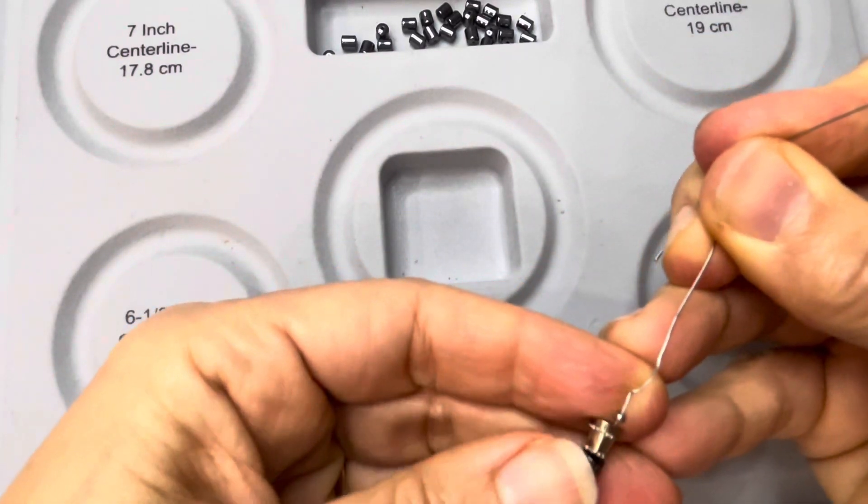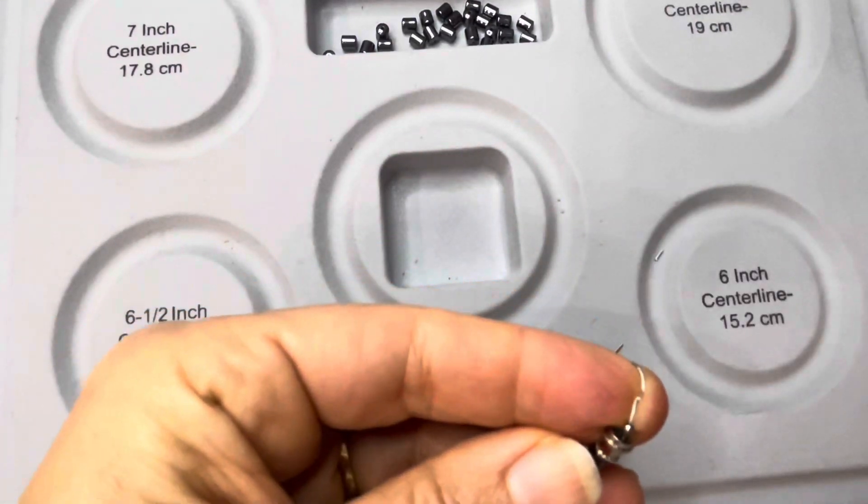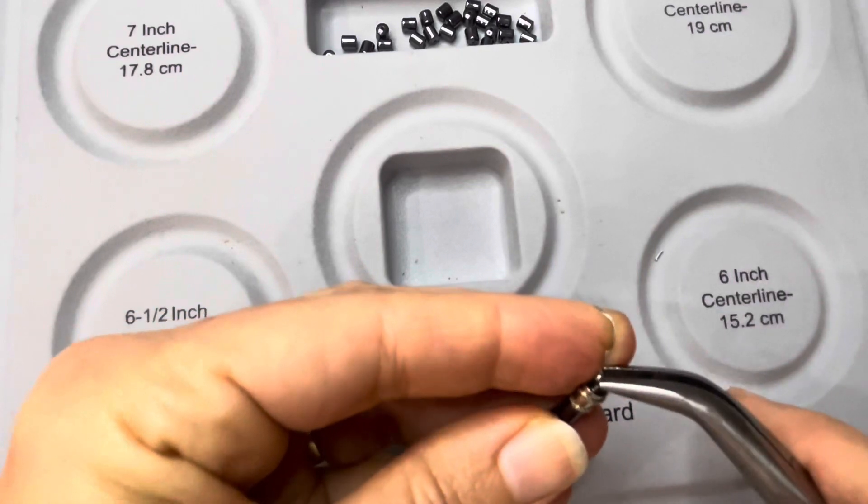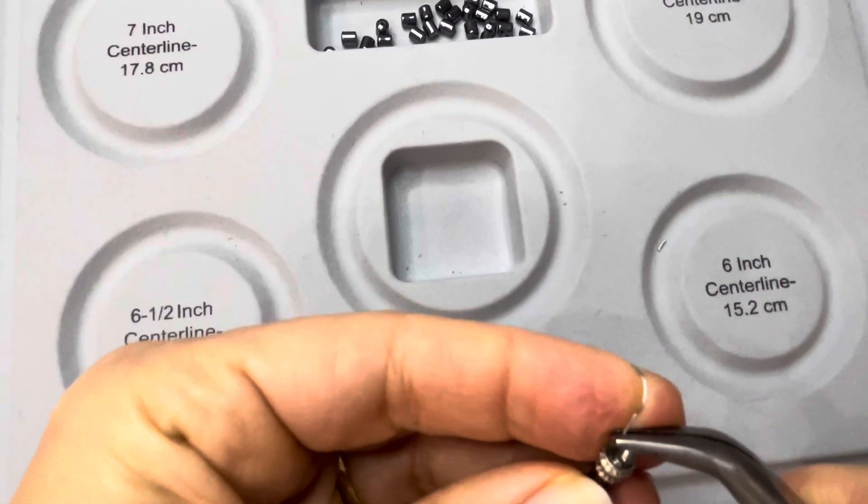What you'll do is use one of your pliers to squeeze that bead right on the wire. You're not feeding it through twice, you're just going to feed it through once and squeeze it.